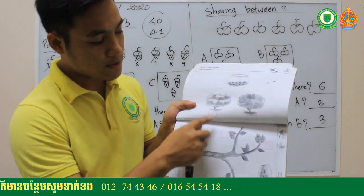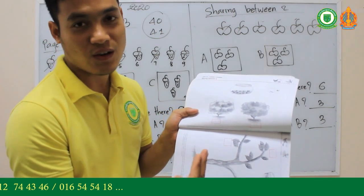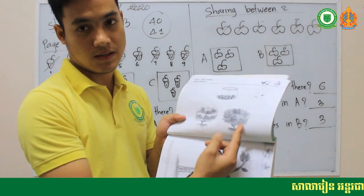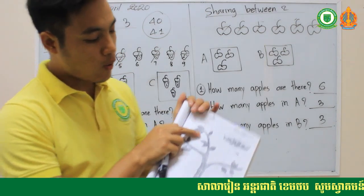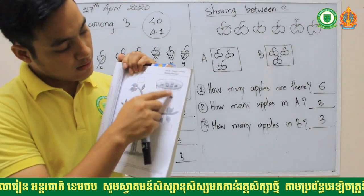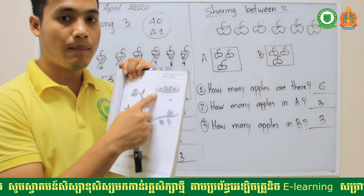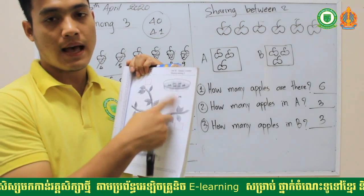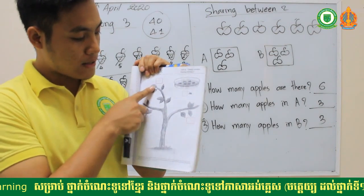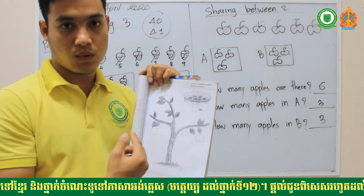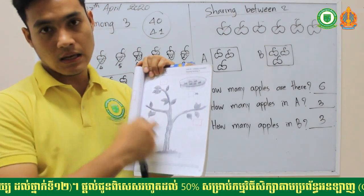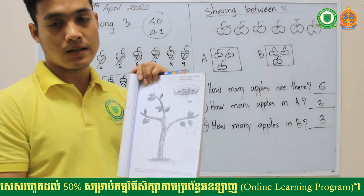If your answer is not the same — for example one jar has two and the other has four — your answer is incorrect. Make sure both boxes have the same number of snails. Your second homework is on page 41: sharing among three. Look at the grasshoppers, count them, and complete the answer. Then share them among three branches, and count each branch to complete the boxes. If all three branches have the same number, your answer is correct.